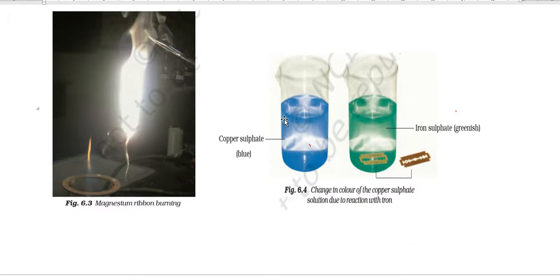When we put an iron nail or blade in copper sulfate solution, it will turn green and the blade will change from brownish to green-white. Copper forms and iron sulfate is produced. So there are two substances in this reaction, so this is also a chemical change.